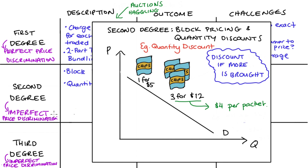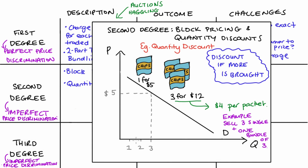On the demand curve, if we sold three single packets of chips for $5 and one bundle of three for $12, we would sell three packets at the higher price of $5. The next three were sold in the bundle for $12 total — $4 each — a lower per-unit price. So we're pricing along the demand curve by offering quantity discounts.